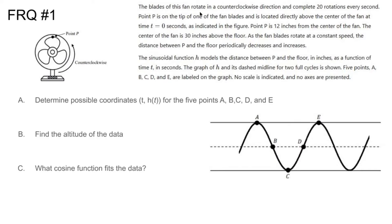The blades of this fan rotate in a counterclockwise direction and complete 20 rotations every second. Point P is at the tip of one of the fan blades and is located directly above the center of the fan at time t equals zero seconds. Point P is 12 inches from the center of the fan, and the center of the fan is 30 inches above the floor. As the fan blades rotate at a constant speed, the distance between P and the floor periodically decreases and increases.